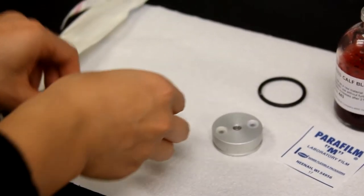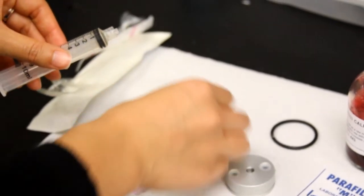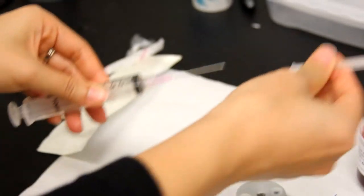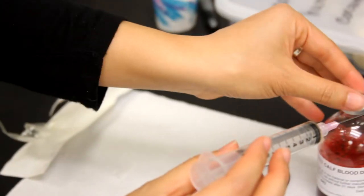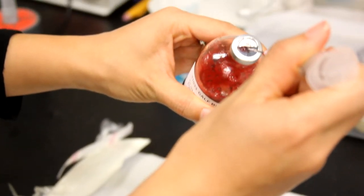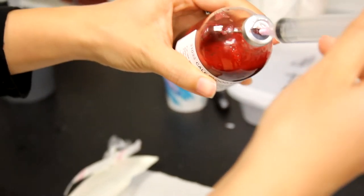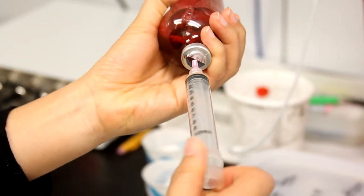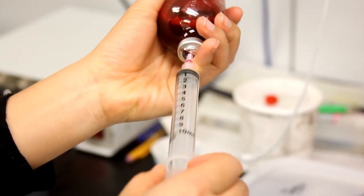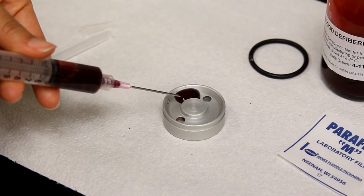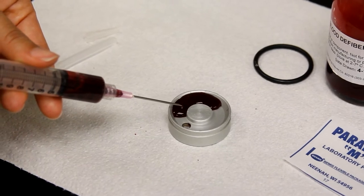Then assemble the needle onto the syringe and extract the amount of blood needed for feeding. The amount of blood used in the reservoir will vary on the amount of mosquitoes you are feeding. Small cages can be given 1-2 milliliters of blood, while larger cages can be given 3 milliliters of blood. Using the syringe, fill the reservoir with the defibrillated calf blood.